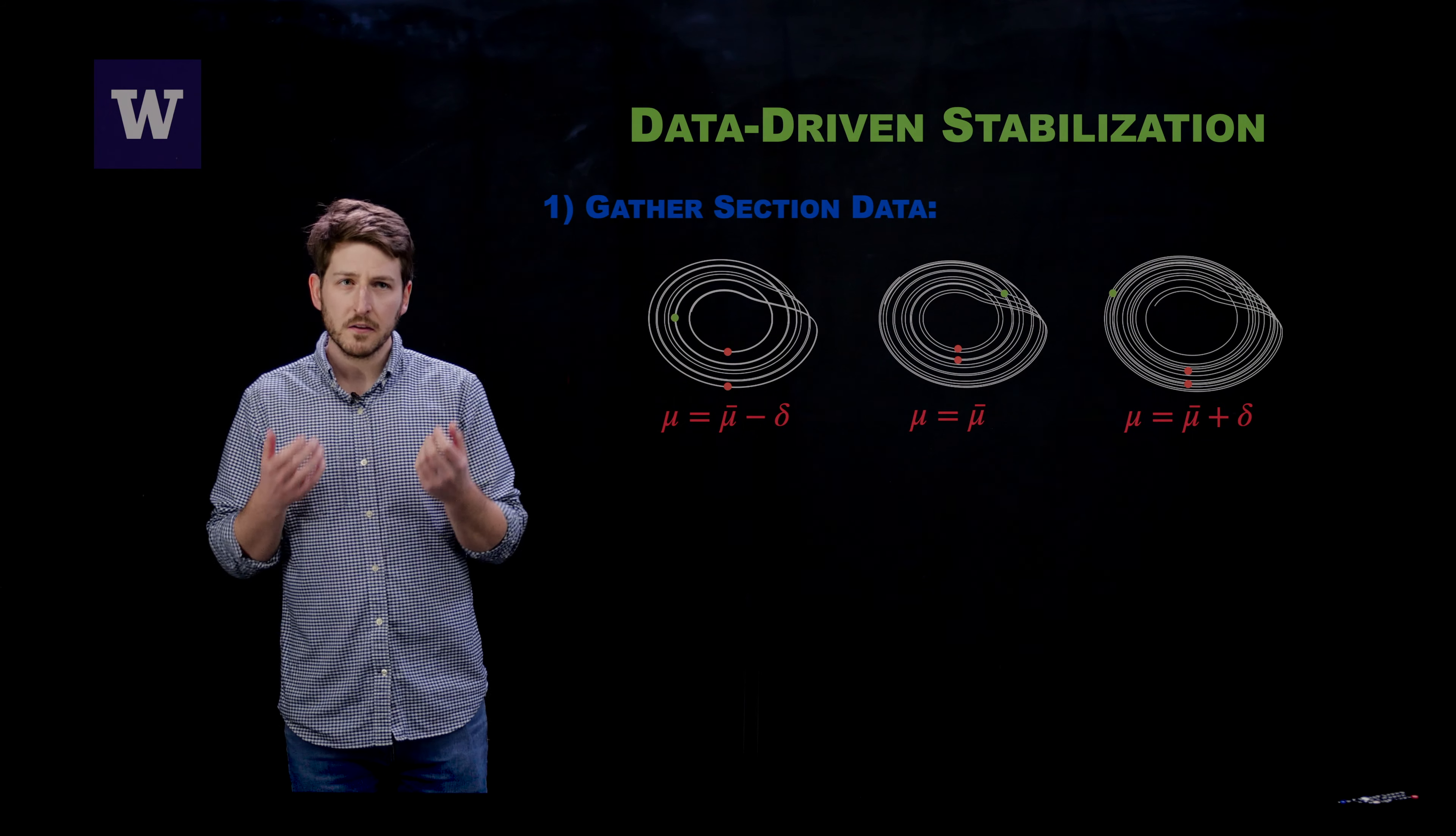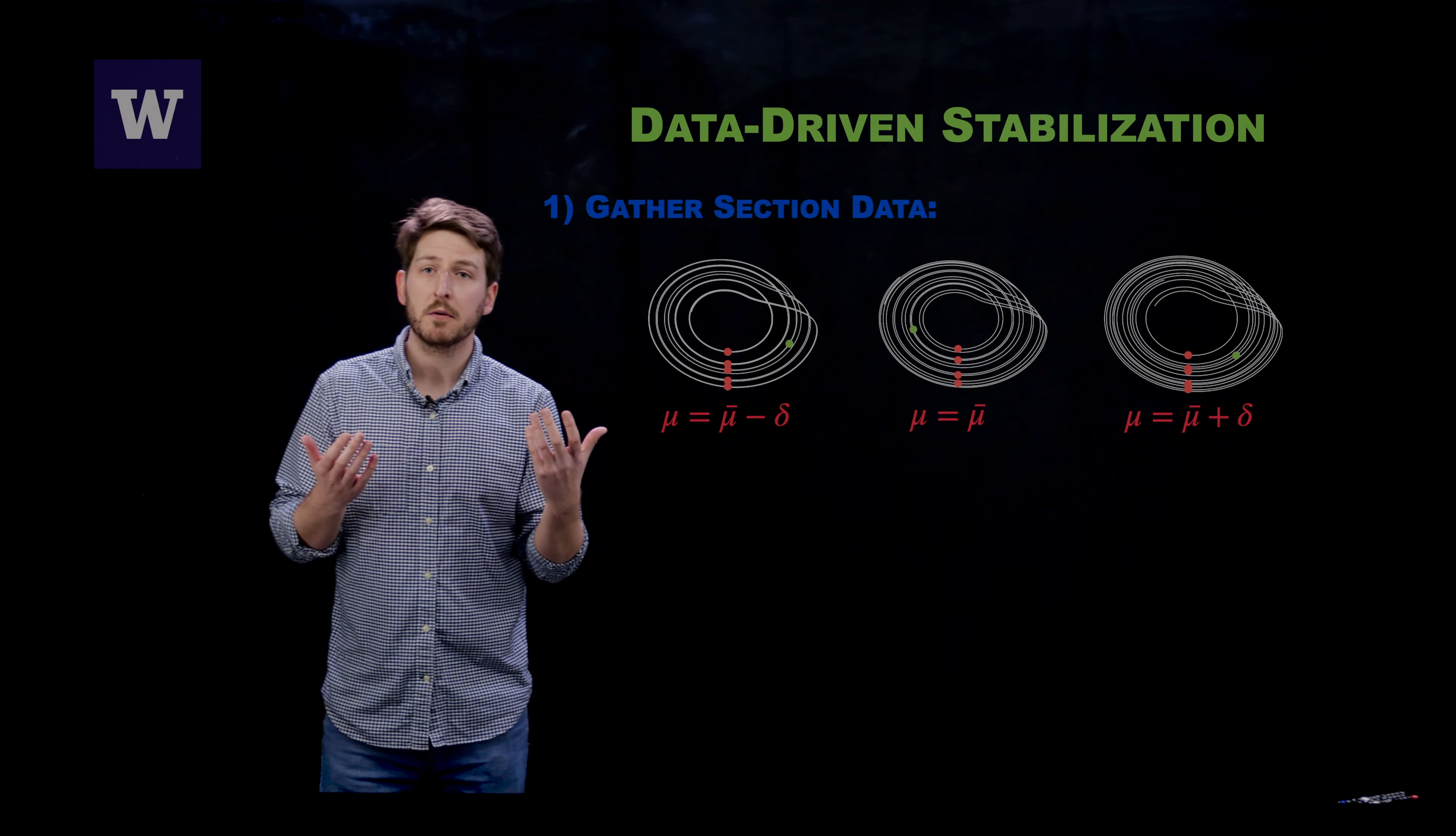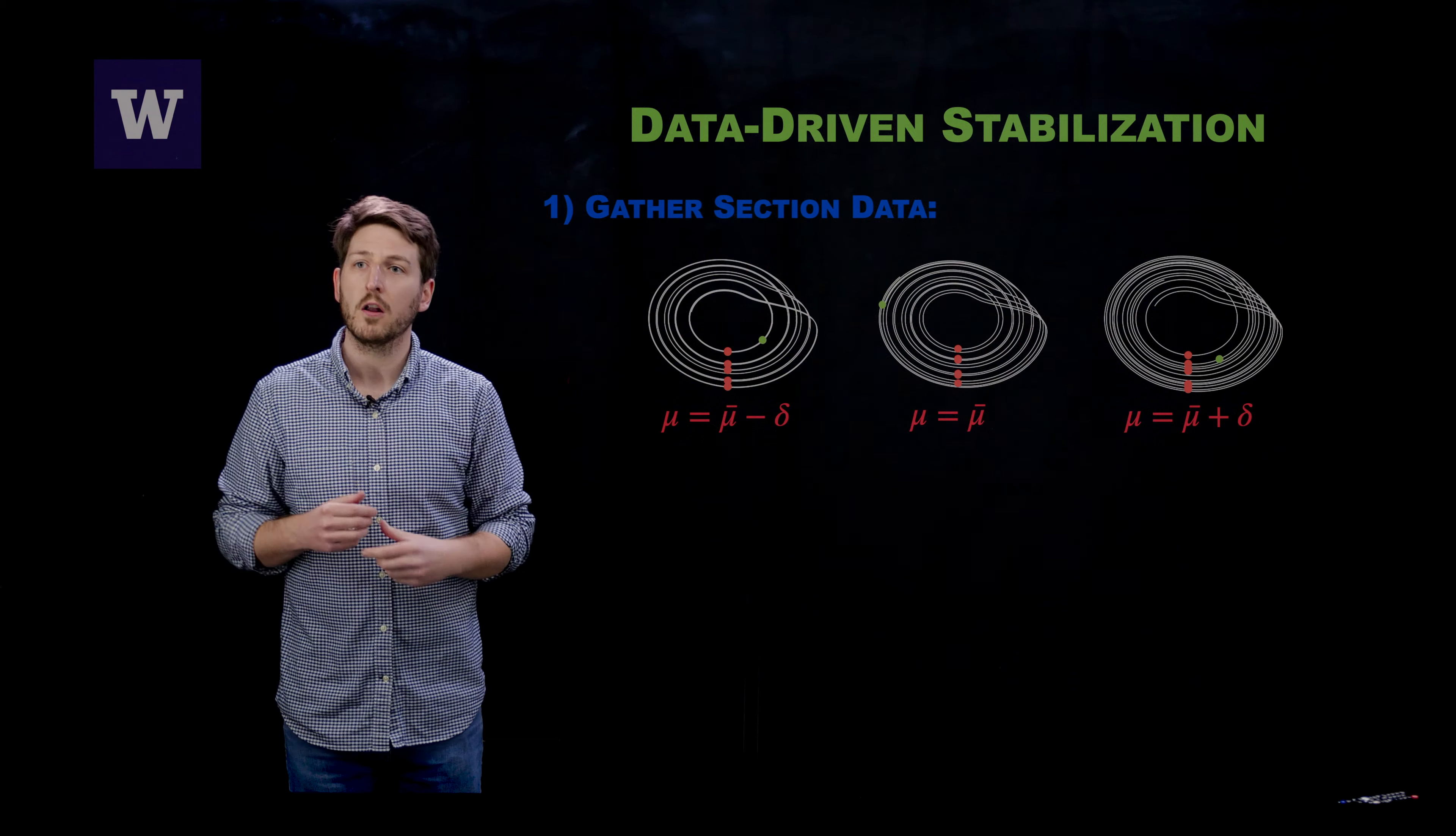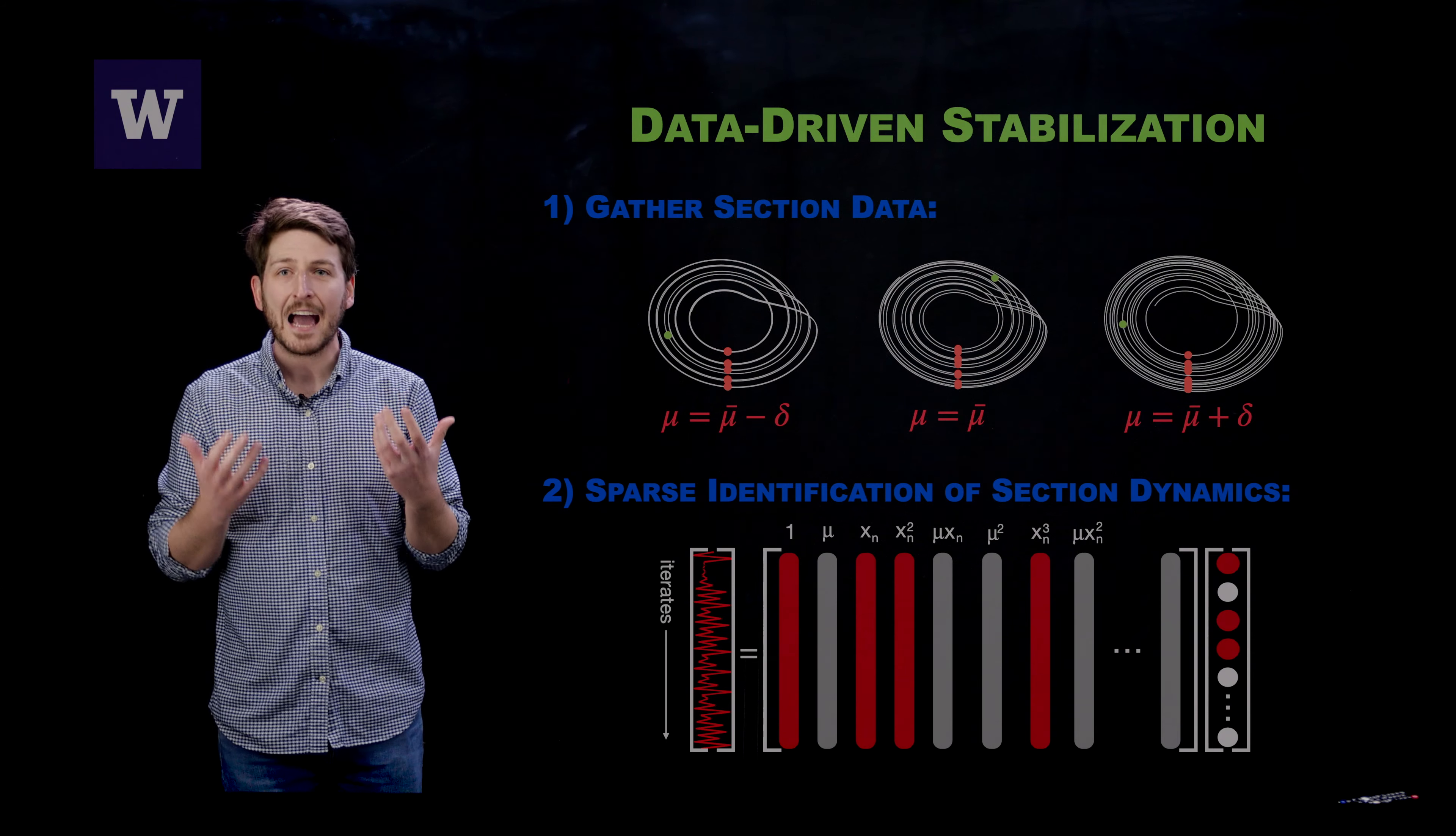And since this is a data-driven method, this is going to start by gathering data. We are going to gather section data over a range of parameter values. You are going to have a focal parameter value, say mu bar here, and you can look in a neighborhood of it and slowly collect data for all of the sections. And then once you've collected all of this data, you can apply modern and novel data-driven discovery techniques to find an accurate representation of your unknown Poincaré mapping.